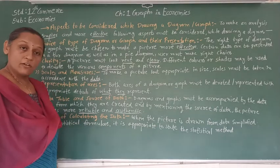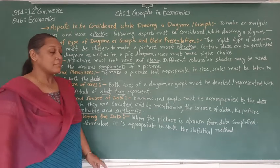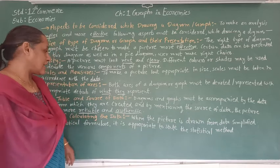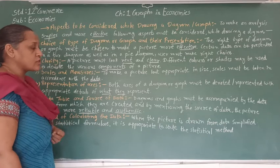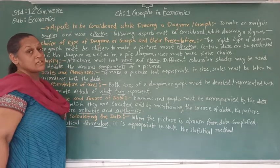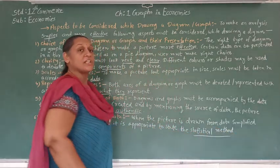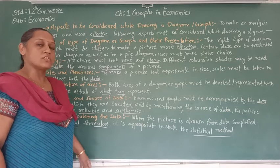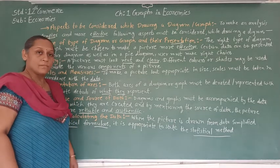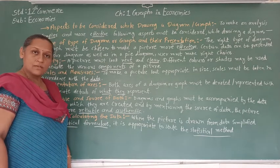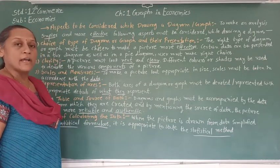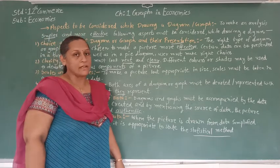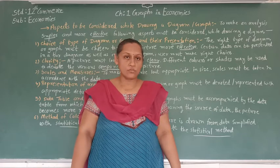The last aspect is the method of calculating the data. When a statistical method has been used, it must be mentioned briefly in the picture. When the picture is drawn from data simplified with a statistical formula, it is appropriate to state the statistical method used so that the reader can understand how the data was calculated and how the graph was drawn. These are the aspects that are to be considered while doing a diagram and graph. Students, note this down in your notebook, and then we are going to see the types of diagram.